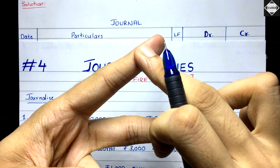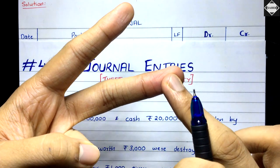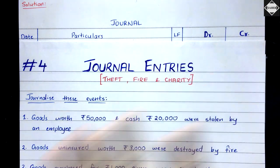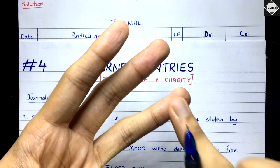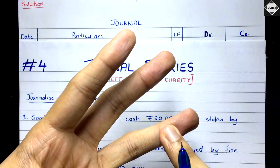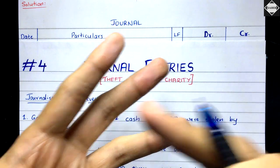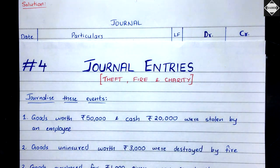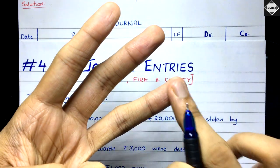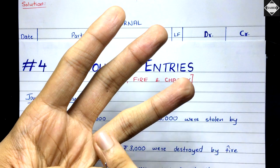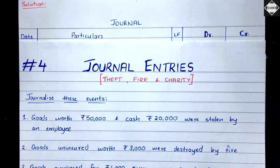Purchase account is an expense account and cash account is an asset account. There is one more account affected — a loss. We have to recognize this loss because these things are going out of the business and in return we haven't got anything, no benefit. So three accounts are involved: purchase account, cash account, and loss account. Purchases and cash are decreasing because they have been stolen, and the loss is increasing — it has been suffered by the business.